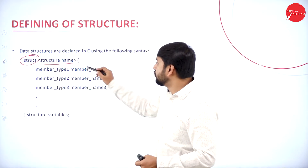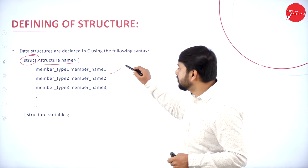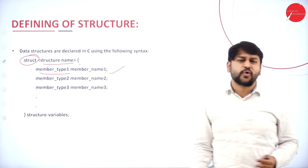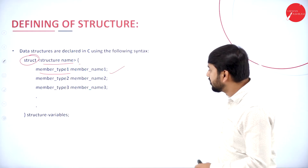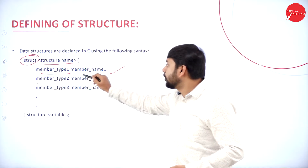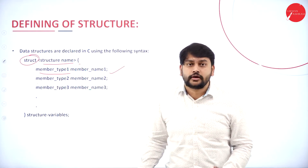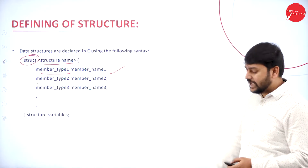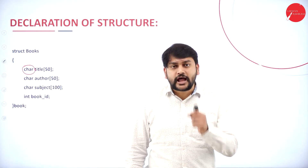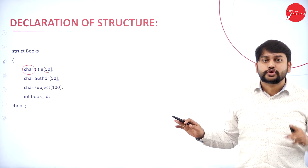After the structure name, you use an opening curly bracket. Inside the curly brackets, you define members using member type and member name. Member type refers to the data type, and member name refers to the variable you are creating. You can have multiple member type–member name pairs, continuing until all members are listed.